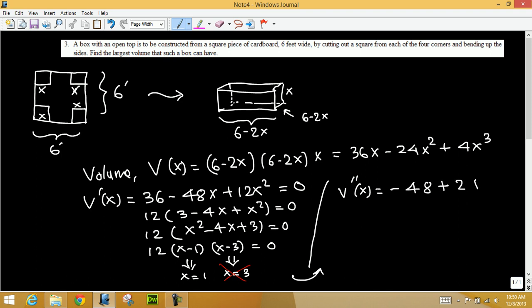That's the second derivative. We want to evaluate the second derivative at X equals one. And the second derivative at one is, plug in one, so negative 48 plus 24 is negative 24.